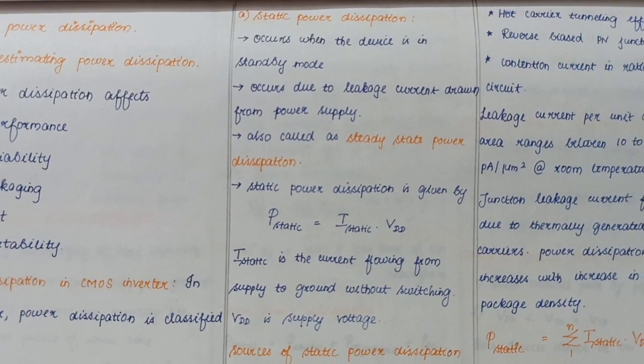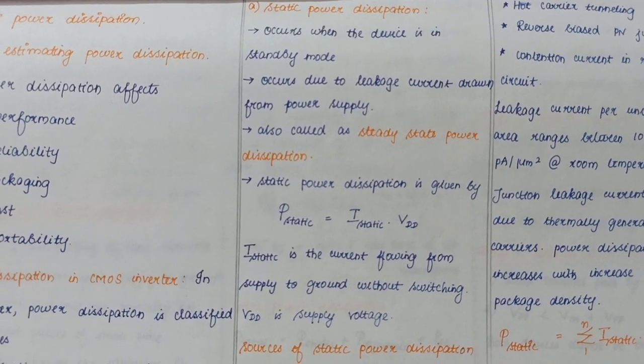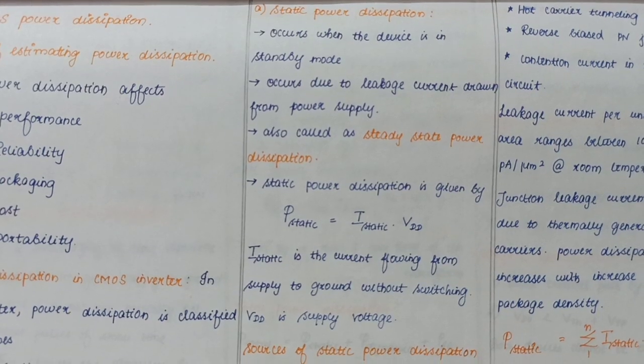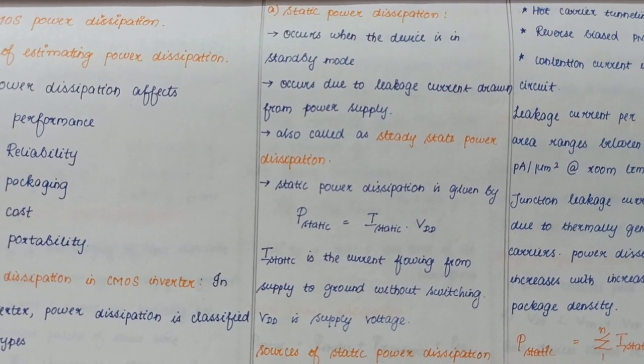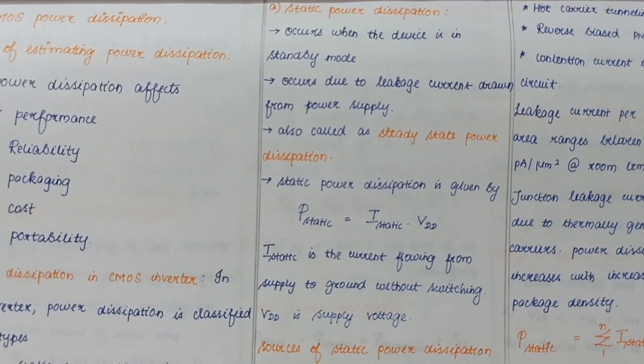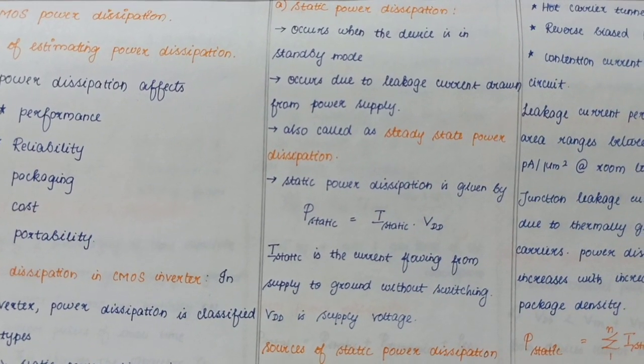First one is static power dissipation. Static power dissipation occurs when the circuit is idle. When the circuit operates, power dissipates - that power is called static power. It occurs due to leakage current drawn from the power supply.